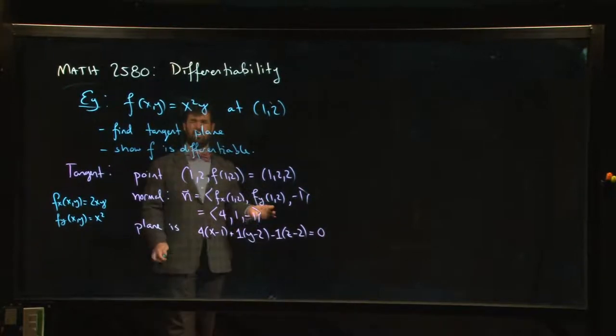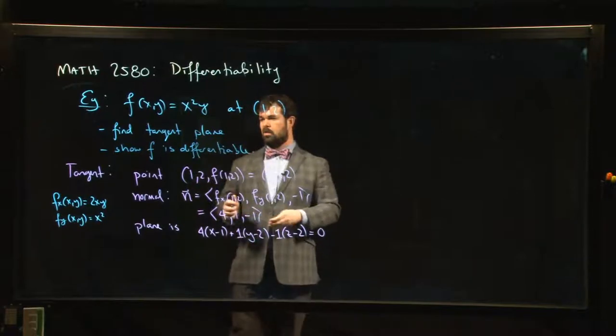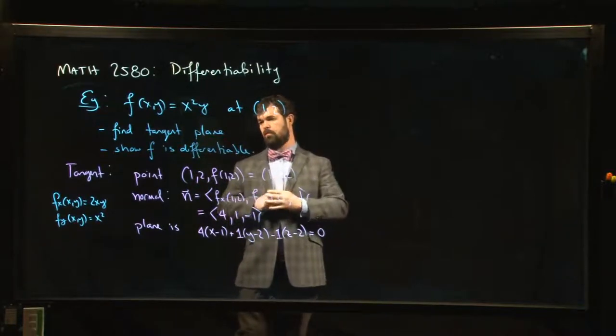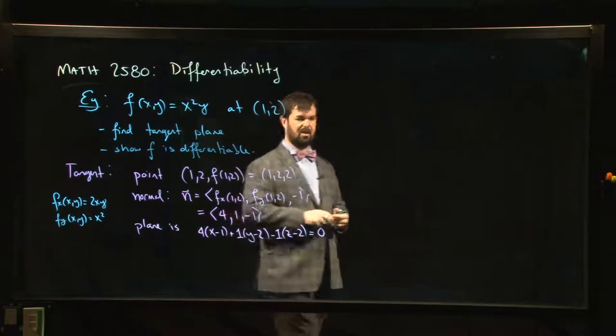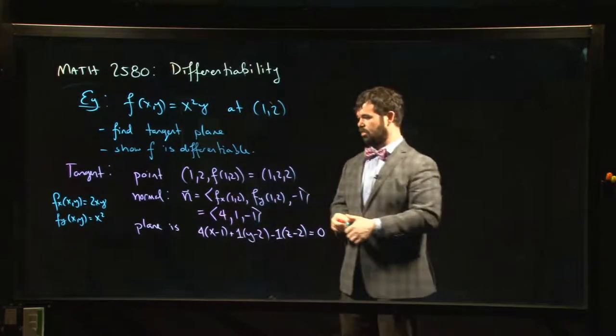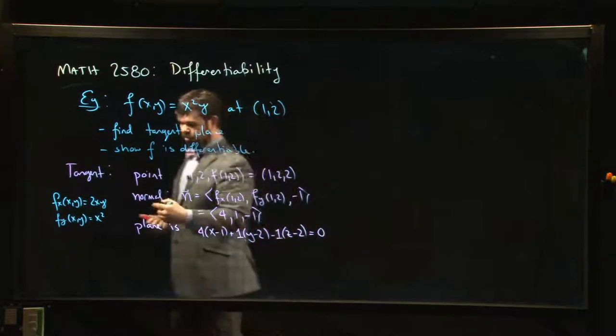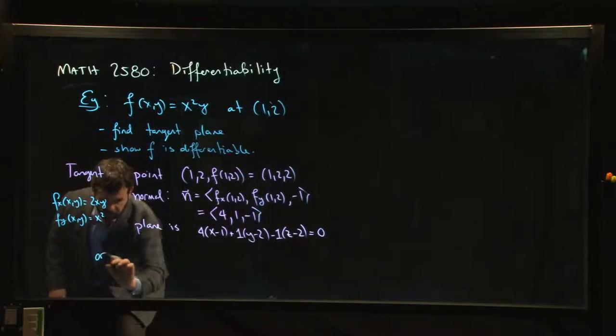It's kind of a standard equation for a plane. The other way you could do this is, just like some people kind of at some point memorize this sort of standard form for a tangent line, you can do the same thing for a tangent plane. You can say, well, that z should just be the linear approximation.